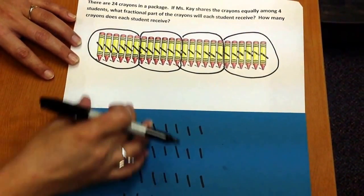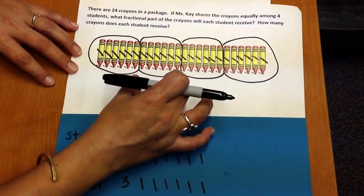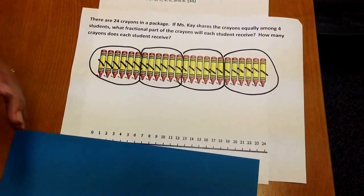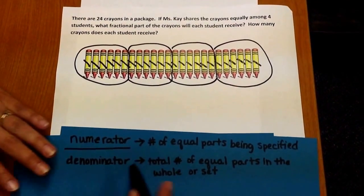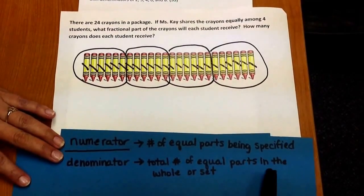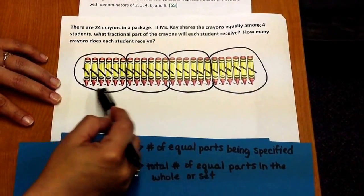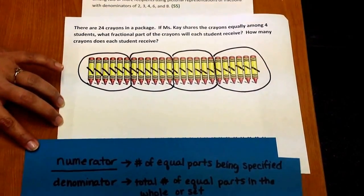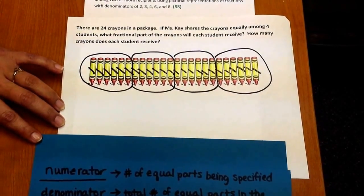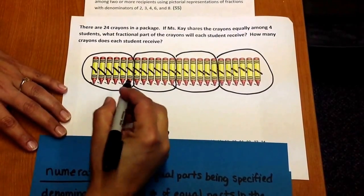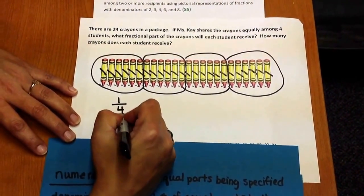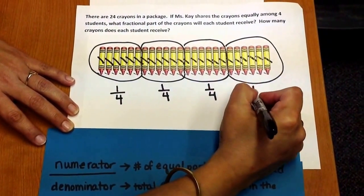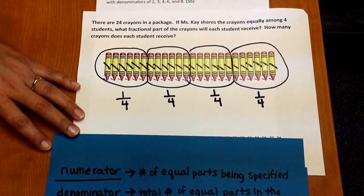So here are the total equal parts. Remember, the denominator is the total number of equal parts in a whole or a set. In this set we have four equal parts, and one student is the part we're looking at. So each student received one-fourth of the crayons.